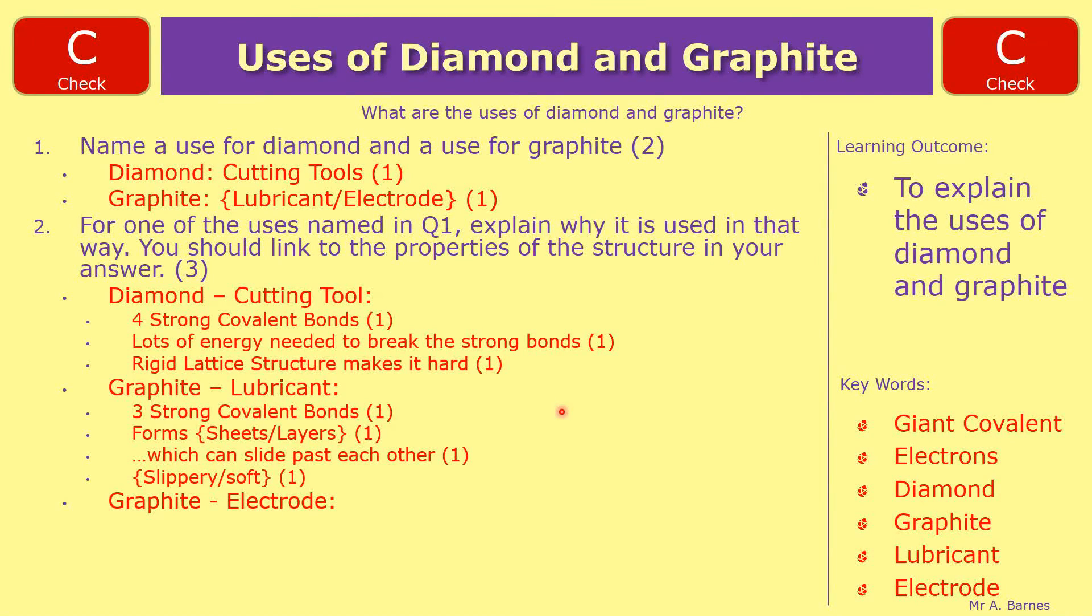And then finally, the electrode. Again, you get the first point for saying three strong covalent bonds, which means it has its spare electrons, which are free to move or delocalized. Try and get that keyword in. And then finally, it can carry a charge, which means it will conduct electricity, making it useful in electrodes.